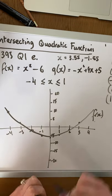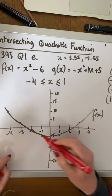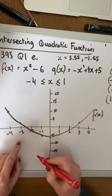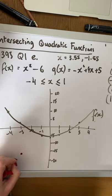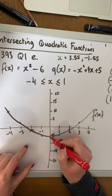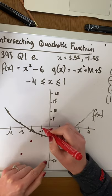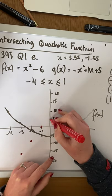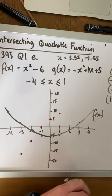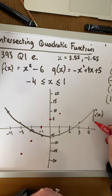Now we need to draw g of x. I'm going to do it in a different color. So we're looking at minus 4, minus 27, which is all the way down here somewhere. Minus 3, minus 16, which is there. Minus 2, minus 7, which is about there. Minus 1, 0. We have 0, 5, 1, 8.